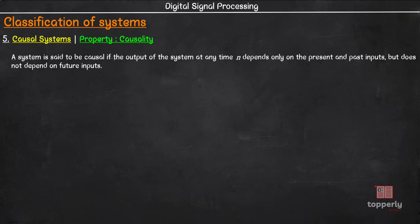A system is said to be causal if the output of the system at any instance n depends only on the present and past inputs and not on the future inputs.